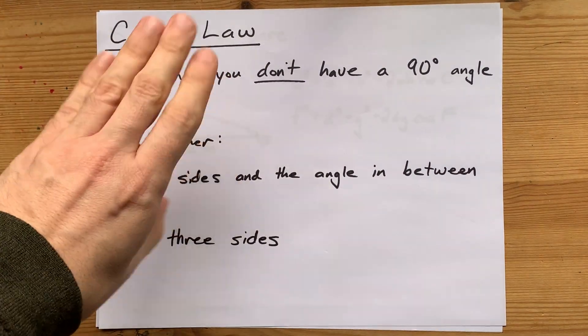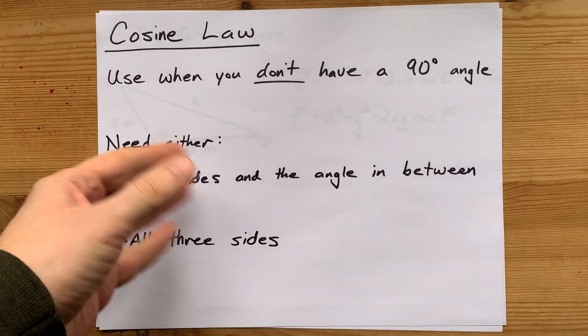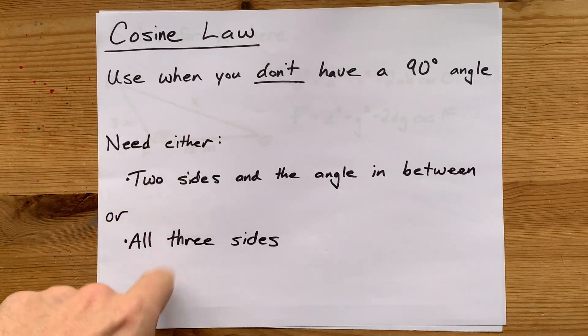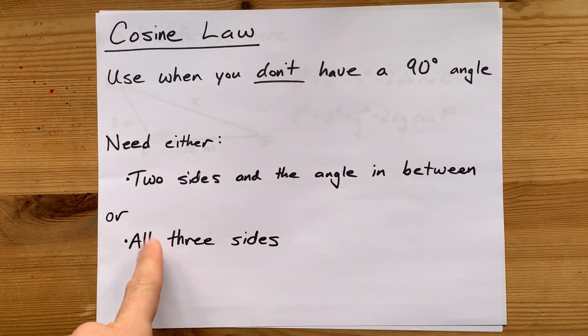Therefore, you'll need some other laws. Sine law might work. Cosine law is what you use when you have either two sides and the angle in between them, or you have all three sides of the triangle.